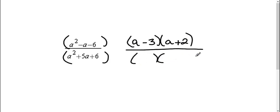On the bottom, I make my two parentheses. I have an a and an a, and now I'm looking at what times 6 gives me, when I add them together, I get 5. A positive 3 and a positive 2.